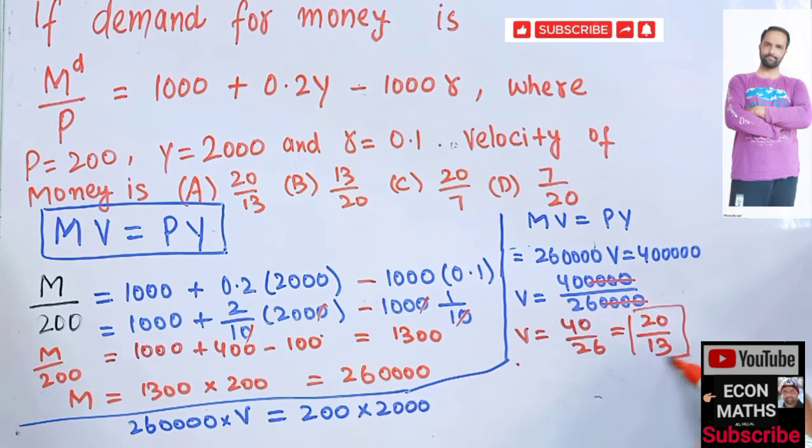So velocity of money is equal to 20/13, so this option is correct. And if we write it in this fashion, 13 ones are 13, then it becomes 7, it is 70, so it will come out around 1.4 or something.